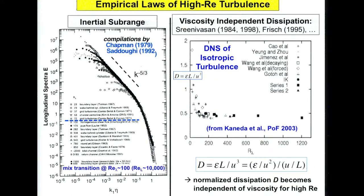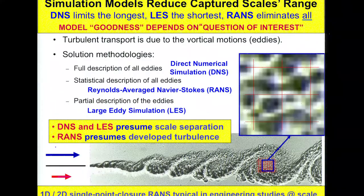What we know from turbulence: unfortunately we still don't have a universal theory, but there are things we generally agree on empirically. If the Reynolds number is high enough, at some point you have an inertial range, which typically happens above the mixing transition. After a certain Reynolds number very close to the mixing transition, dissipation becomes not only finite but also independent of Reynolds number. These are the two major pieces we use when deciding how to model in simulations.